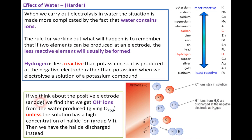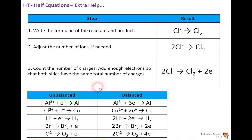At the positive electrode (the anode), we get OH⁻ ions from the water giving oxygen — unless the solution has a high concentration of halide (Group 7) ions, in which case the halide is discharged instead. This is a higher tier skill that requires careful thought.